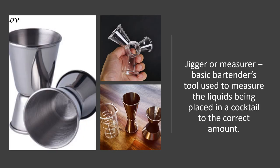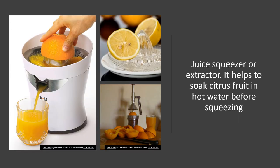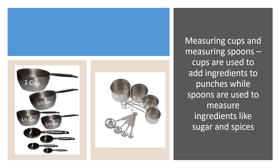In cooking we call it a measuring spoon; in bartending we call it a jigger or measurer — it is a basic bartender's tool used to measure liquids being placed in a cocktail to the correct amount. A juice squeezer or extractor is a device that helps get the juice from lemon, orange, and other citrus fruits. It also helps to soak the citrus fruits in hot water before squeezing. Measuring cups are used to add ingredients to punches, while measuring spoons are used to measure ingredients like sugar and spices.